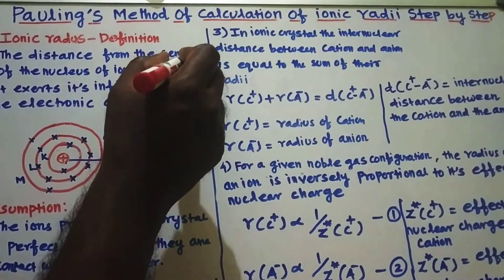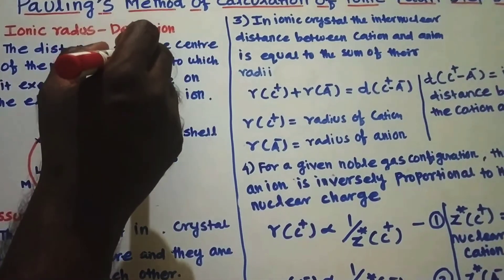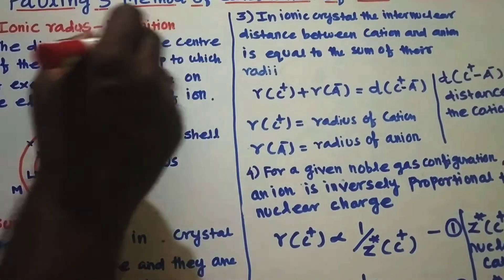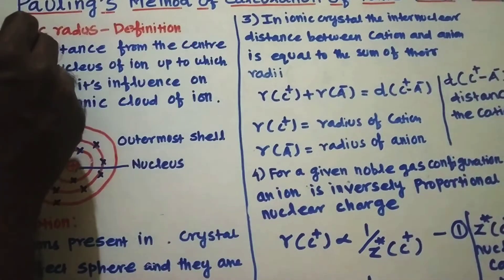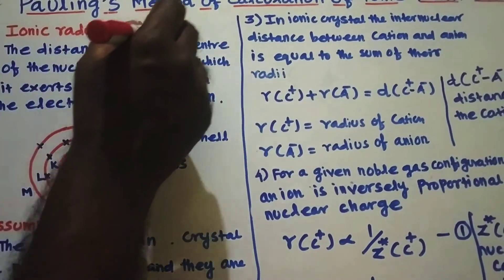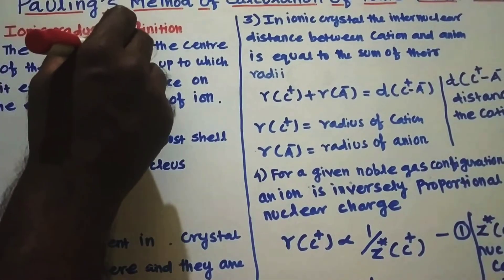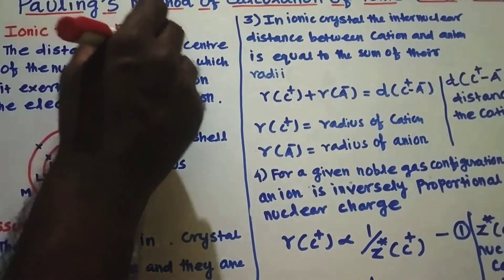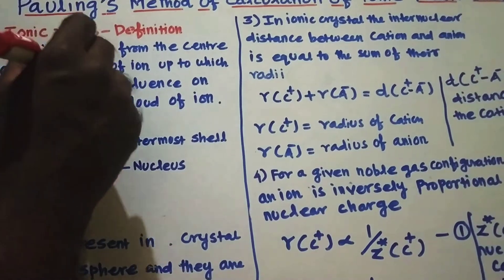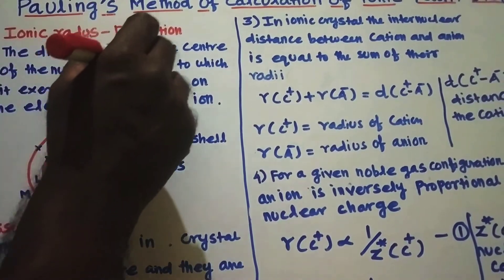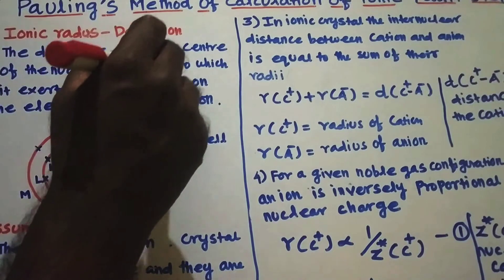First of all, we are going to see what is meant by ionic radius — the definition. The distance from the center of the nucleus of an ion up to which it exerts its influence on the electronic cloud of the ion.